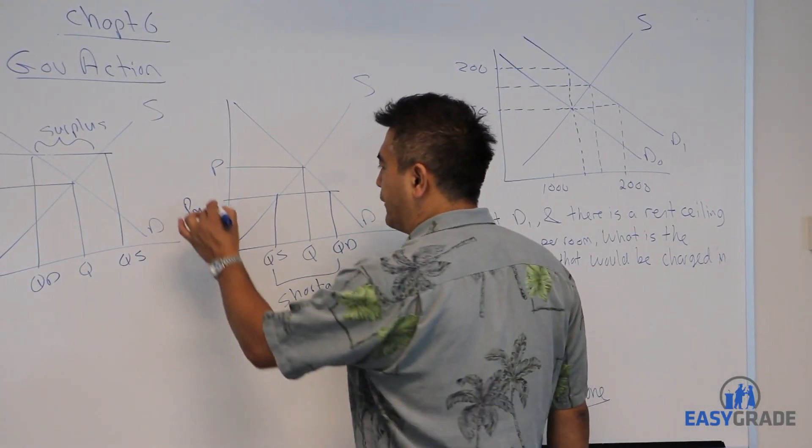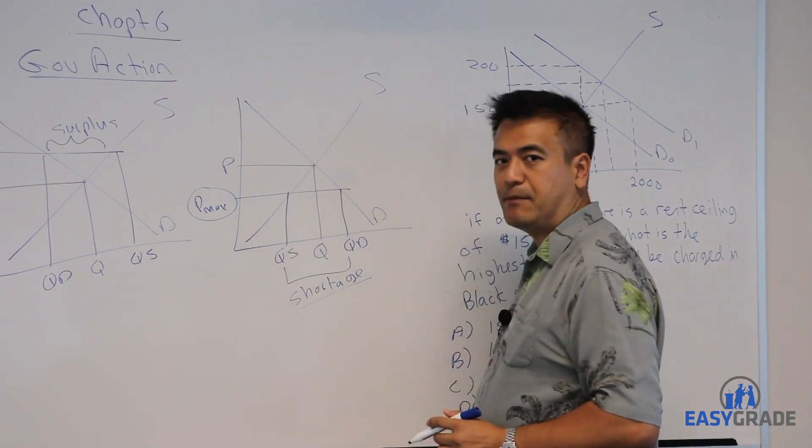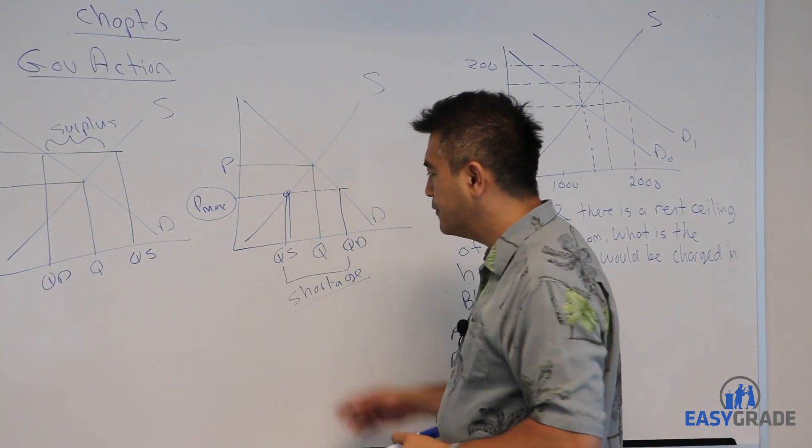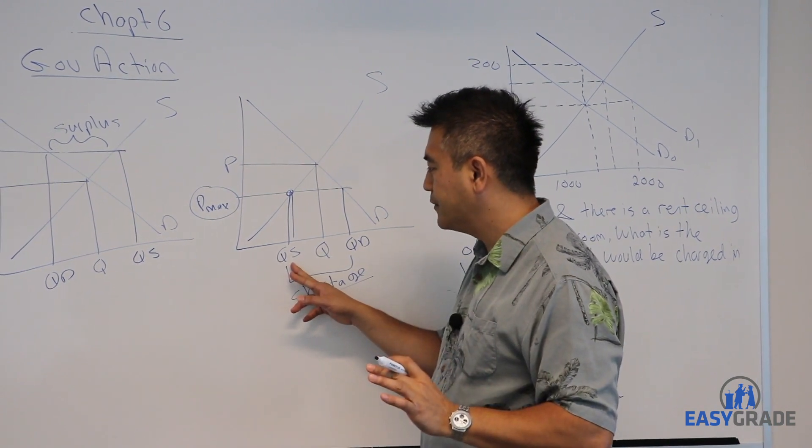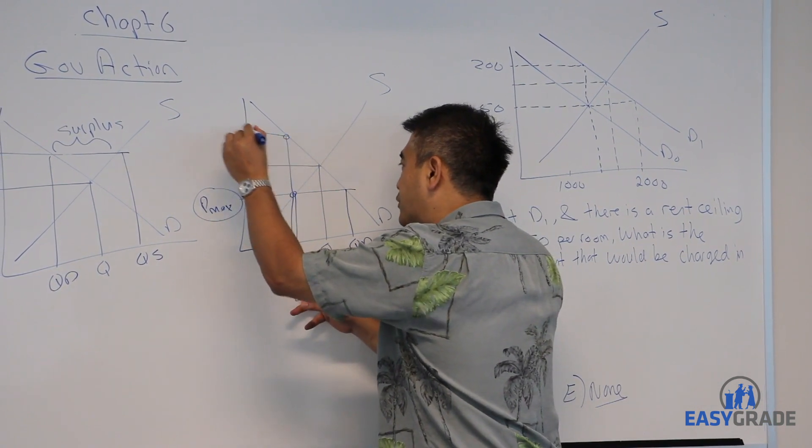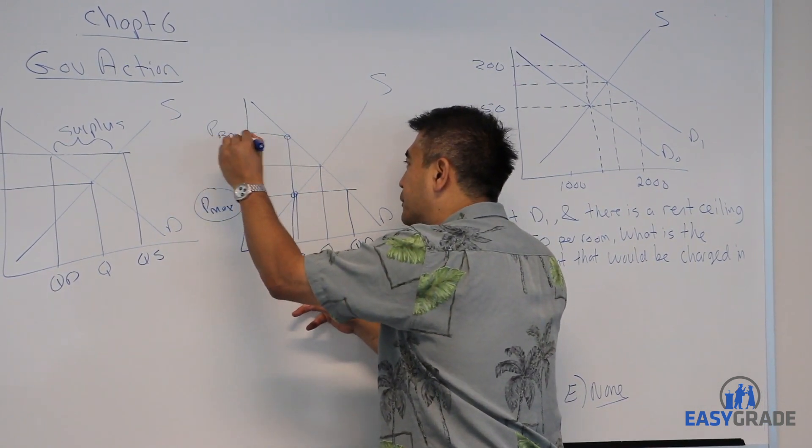As you can see, if we set the price at Pmax, the quantity produced by the firms is right here. But at this quantity, people are willing to pay, go to the demand curve, this price, and we'll call this the black market price.